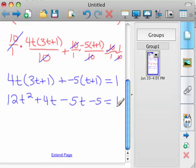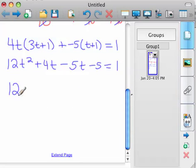Just combine like terms. 12t squared doesn't combine with anything. 4t and negative 5t is negative 1t minus 5 equals 1.